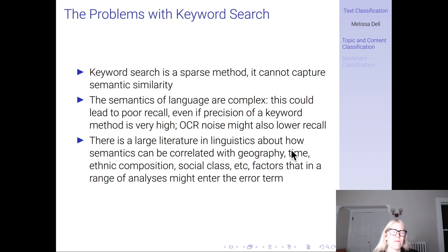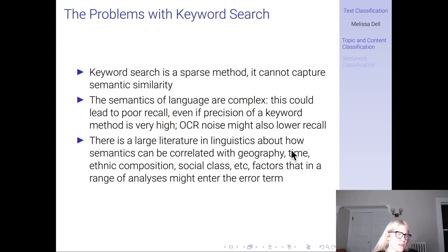As we've talked about over and over again in this class, the semantics of language are complex. At a minimum, this could lead to poor recall, even if the precision of a keyword method is quite high. Of course, OCR noise might also lower recall.